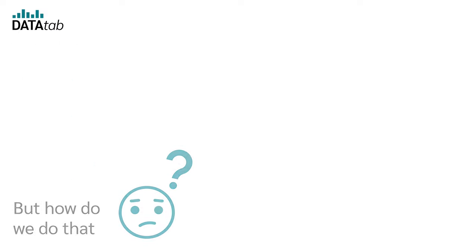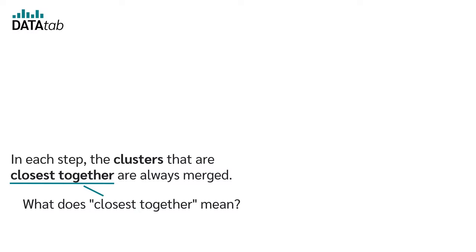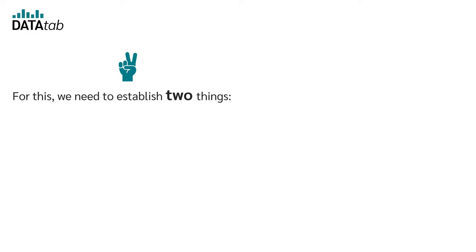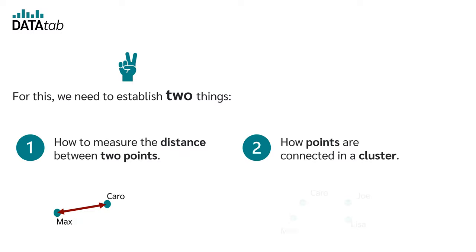But how do we do that? In each step, the clusters that are closest together are always merged. What does closest together mean? For this, we need to establish two things: one, how to measure the distance between two points, and two, how points are connected in a cluster.